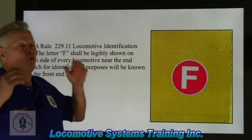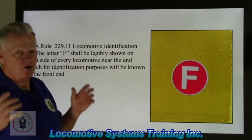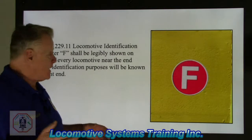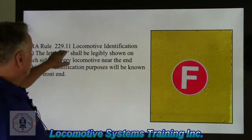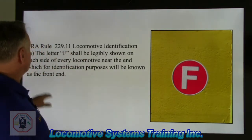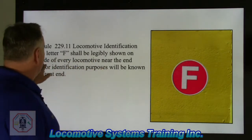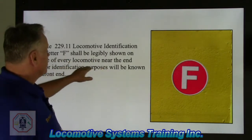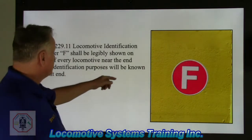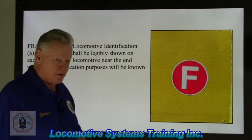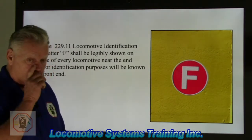Ladies and gentlemen, what determines everything in a locomotive is the letter F. This is FRA rule 229.11 — Locomotive Identification. The letter F shall be legibly shown on each side of every locomotive near the end which, for identification purposes, will be known as the front end. Word for word, right out of the FRA rule book.